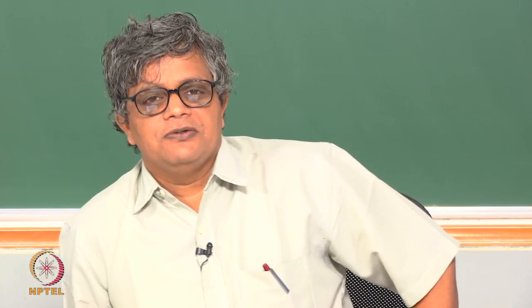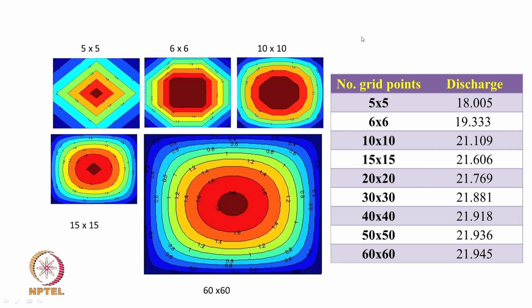We have done manually both the problems — flow through a rectangular duct and also flow through a triangular duct. Because we are doing manually, we had to restrict ourselves to a small number of cells, but you could write a computer program and then increase the number of cells so that you would actually get a proper solution. And that is what is done by a student in a regular CFD course here at IIT Madras, and the results are shown here.